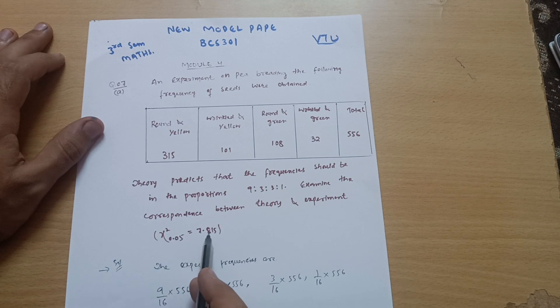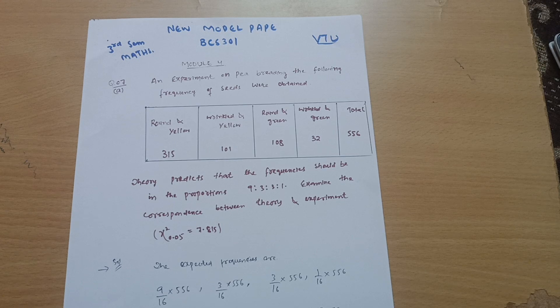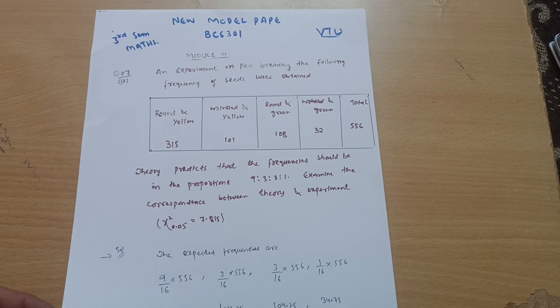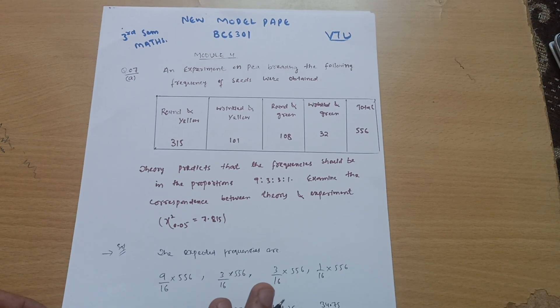So this is the chi-square distribution problem. As previously we have solved one or two problems from chi-square distribution, the procedure is the same, only the way of asking the question is different.